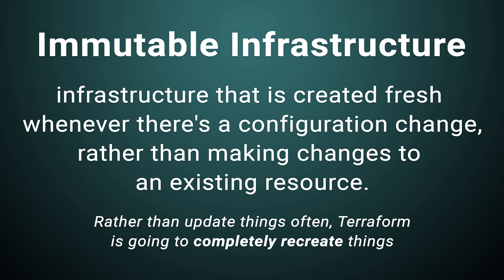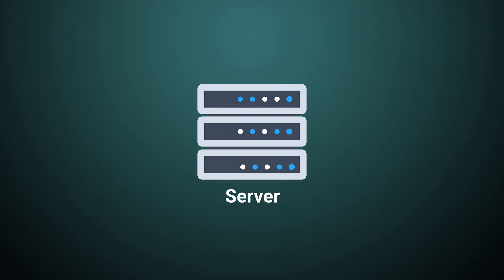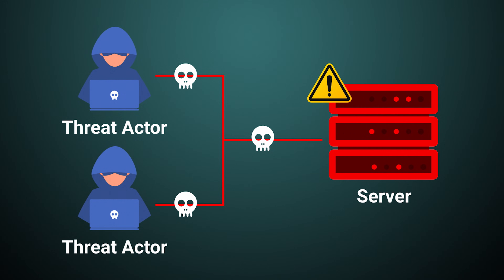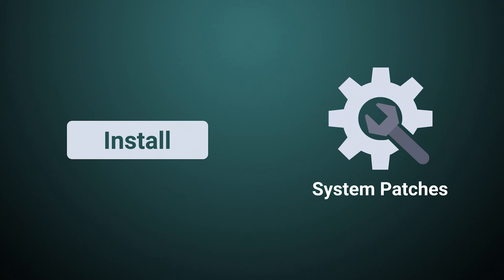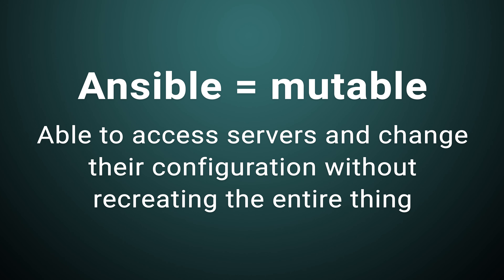When it comes to Ansible, however, Ansible is not immutable like Terraform is. For example, if there's a critical vulnerability being actively exploited to gain unauthorized access to your servers, it's very important to get the patch installed on each and every server. If your organization has hundreds of servers, manually installing the patch would be very time consuming. But since Ansible is mutable — the opposite of immutable — you can define a requirement that your infrastructure needs to have that patch installed. Ansible will connect to each server and carry out the instruction. Since Ansible is mutable, it's able to access servers and change their configuration without recreating the entire thing.